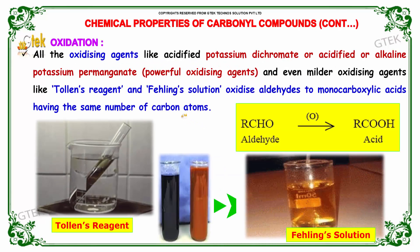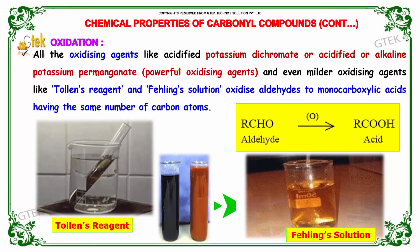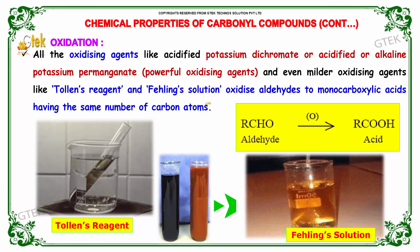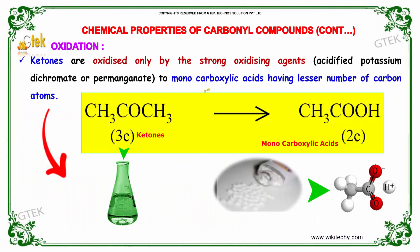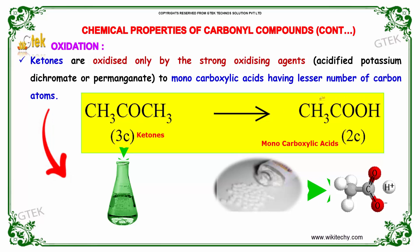Oxidation: All the oxidizing agents like acidified potassium dichromate, acidified or alkaline potassium permanganate, and even milder oxidizing agents like Tollens reagent and Fehling's solution oxidize aldehydes to monocarboxylic acids having the same number of carbon atoms. Ketones are oxidized only by the strong oxidizing agents to monocarboxylic acids having a lesser number of carbon atoms — that is, ketones producing monocarboxylic acid which is one carbon less than the reactant.